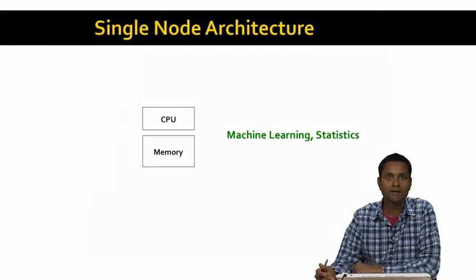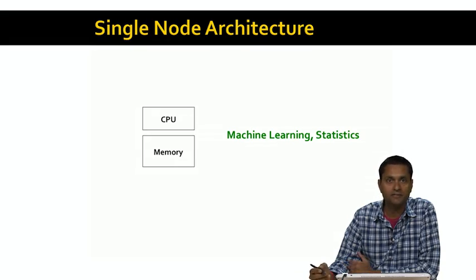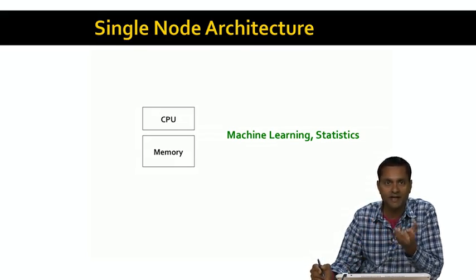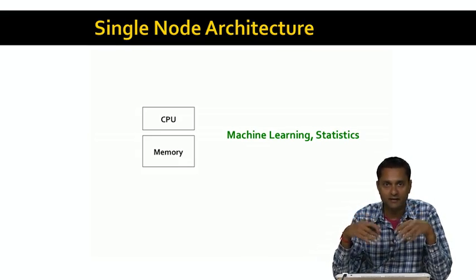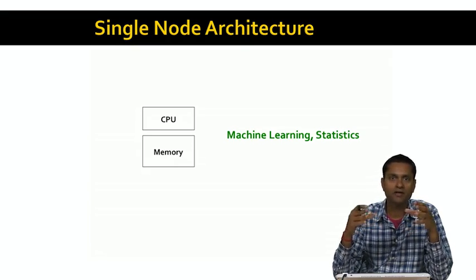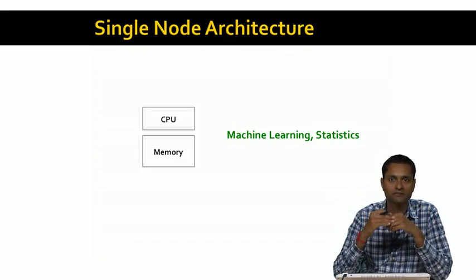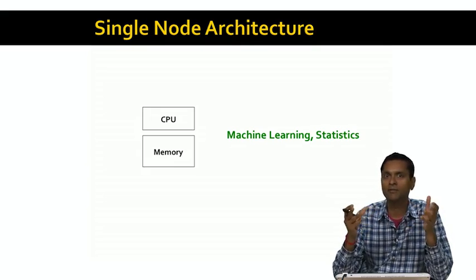Let's start with the basics. We're all familiar with the basic computational model of CPU and memory. The algorithm runs on the CPU and accesses data that's in memory. We may need to read the data in from disk into memory, but once the data is in memory, it fits in there fully, so you don't need to access disk again. The algorithm just runs on the data that's in memory. This is a familiar model used to implement all kinds of algorithms in machine learning, statistics, and pretty much everything else. But what happens if the data is so big that it can't all fit in memory at the same time?